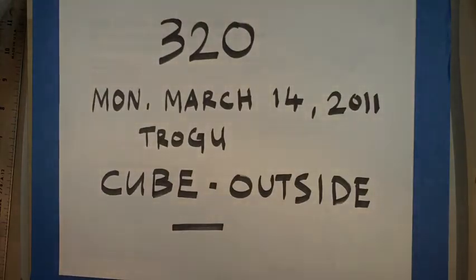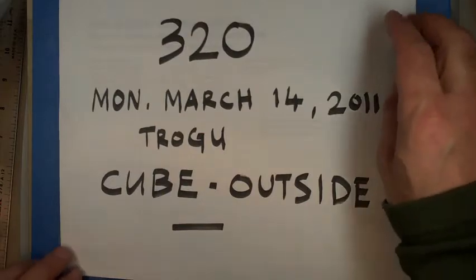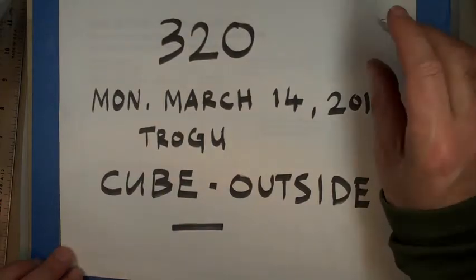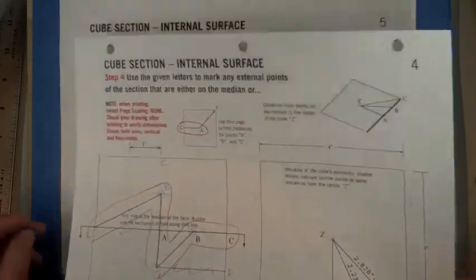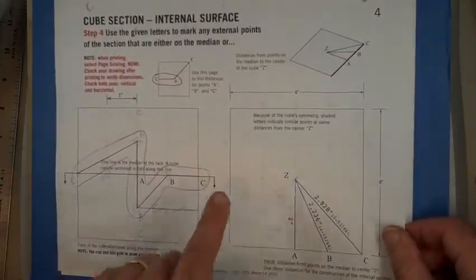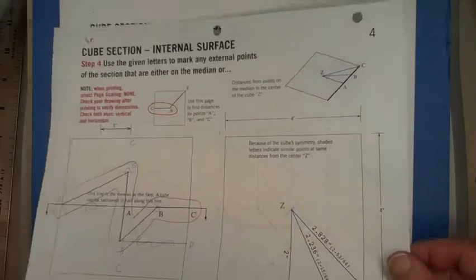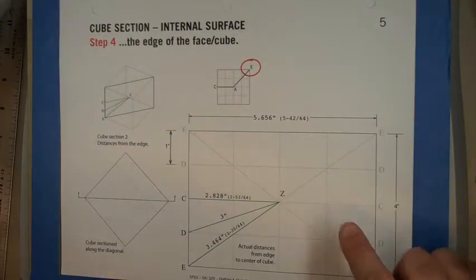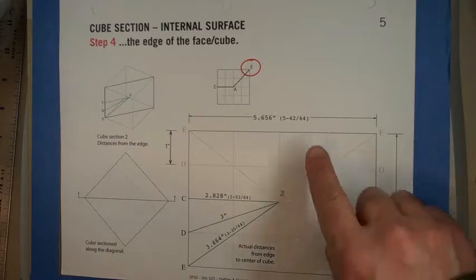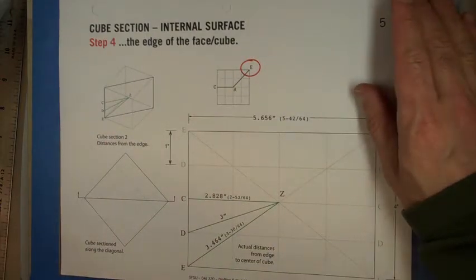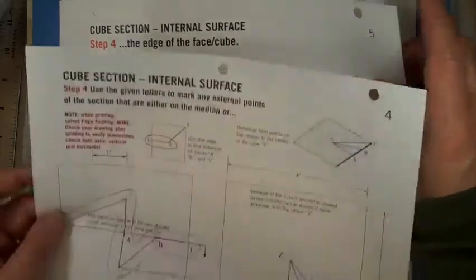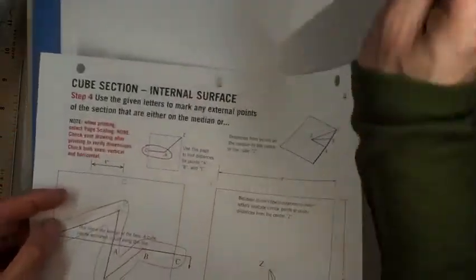This is just a quick demo on how to do the outside of the cube. For it you're going to need your two pages from the handout—the one that shows the cross section along the median of the cube and the one that shows the cross section along the diagonal. And actually it is more useful for the inside than the outside, so we'll put that aside for a moment.